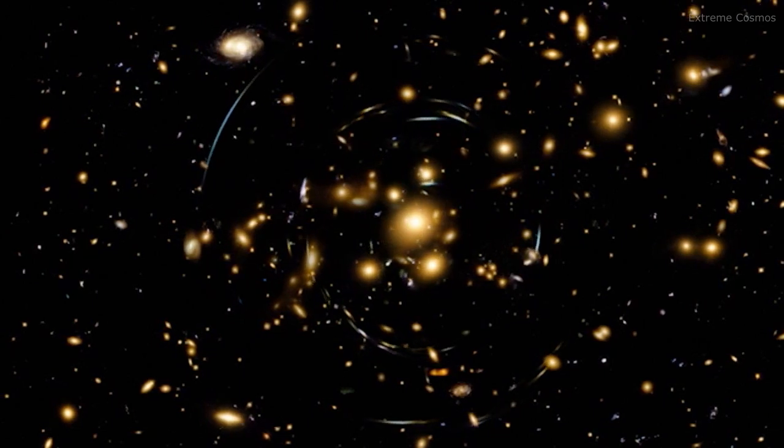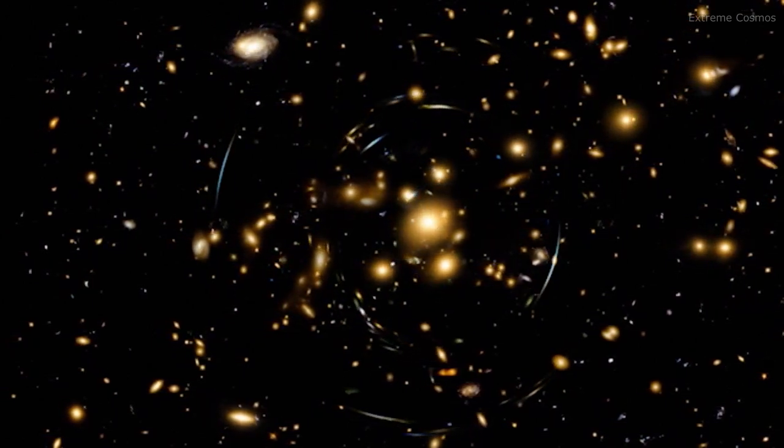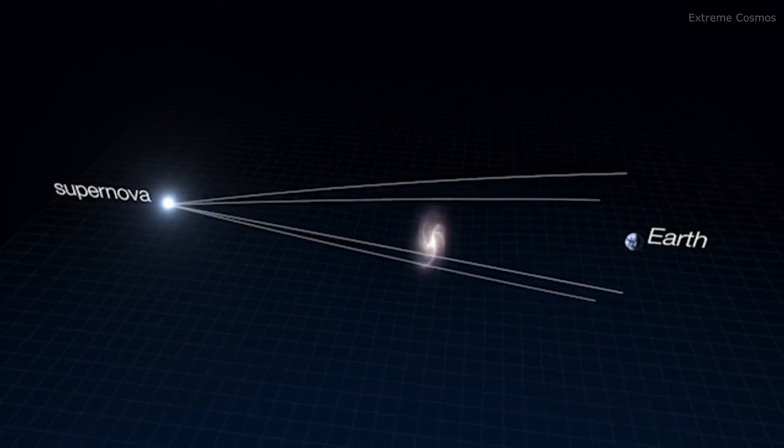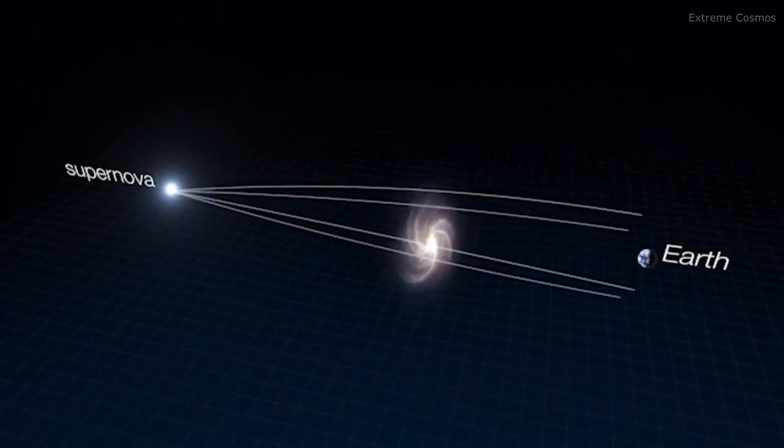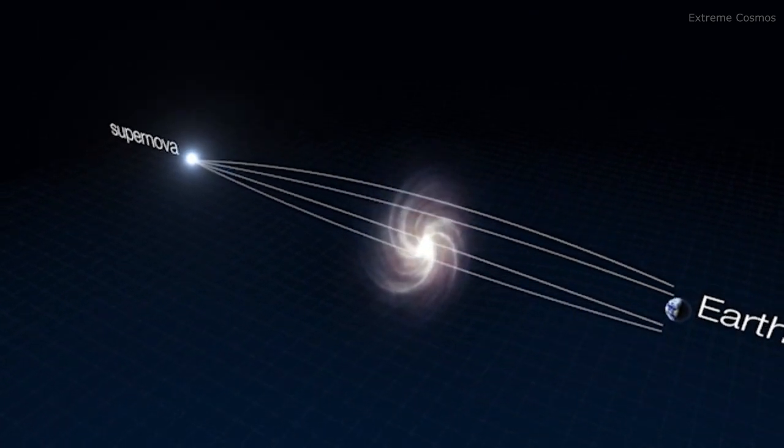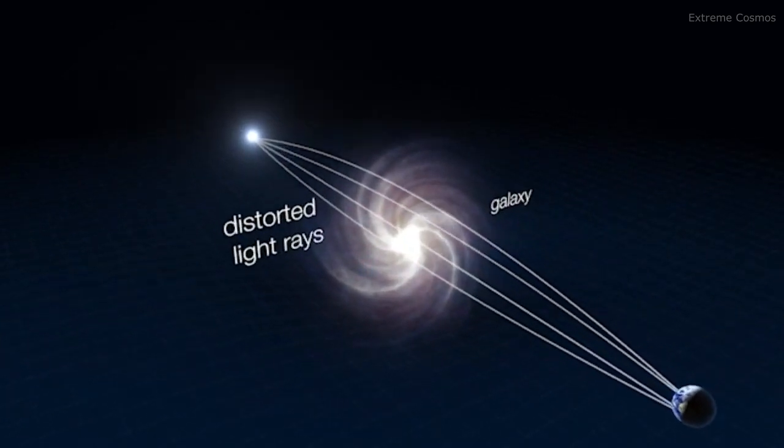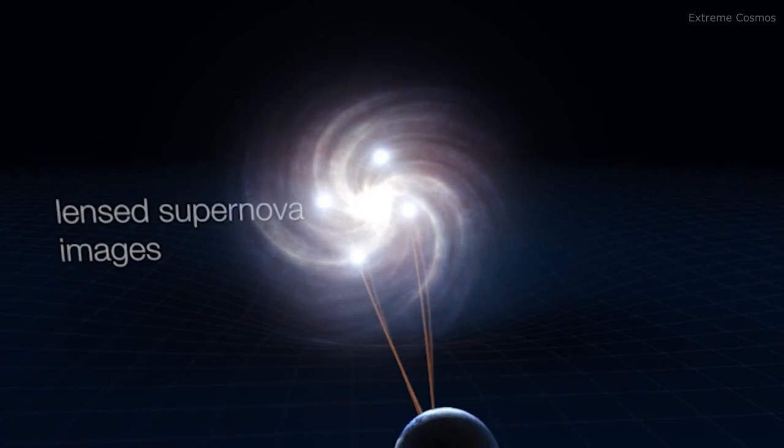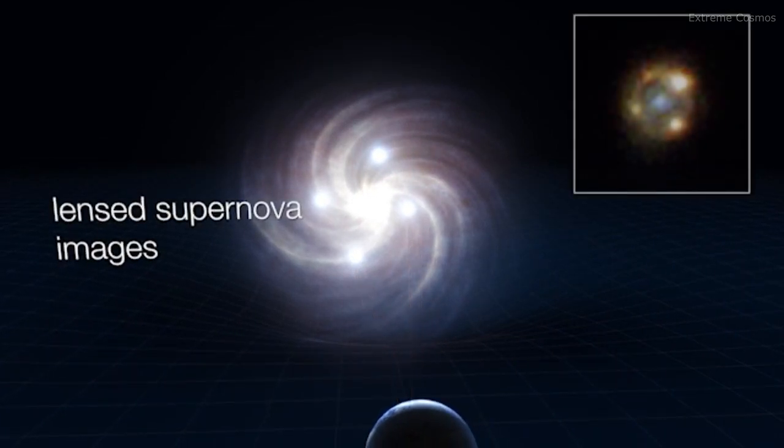Gravitational lensing is a phenomenon created by extremely concentrated masses, like the cores of galaxies or galaxy clusters. Their strong gravity warps the surrounding space, and light from distant objects traveling through that warped space is curved away from its straight-line path as if passing through a lens.